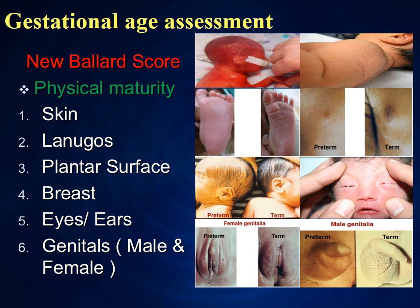Then, assessment of gestational age after birth. The score used is called the Ballard Score, which has 12 points: 6 points from physical maturity and 6 points from neuromuscular maturity. First, we see physical maturity. The score has a minus 1 to 5 marking range. We will see the full table at the end.